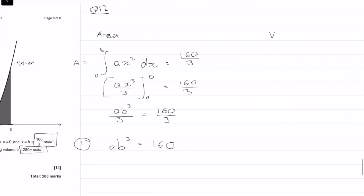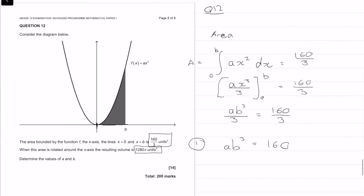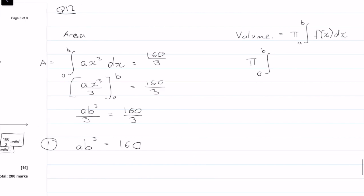The second thing we're going to do is deal with the volume. If we look up the equation on our equation sheet, our volume is equal to pi times the integral from a to b of f of x dx. So in this case, our volume is equal to pi times the integral from 0 to b — because we're starting at the origin, so a is equal to 0 — of ax squared, and we're going to square that.